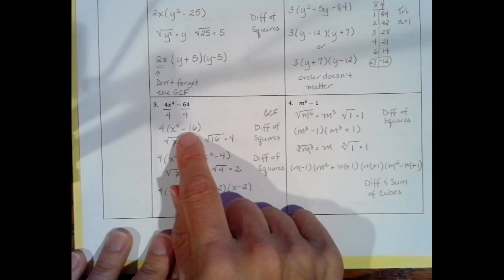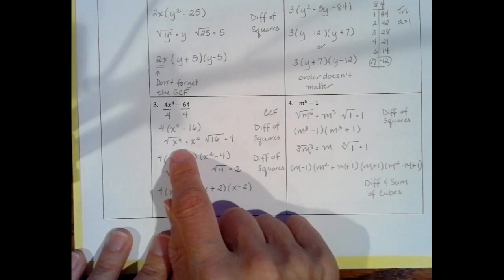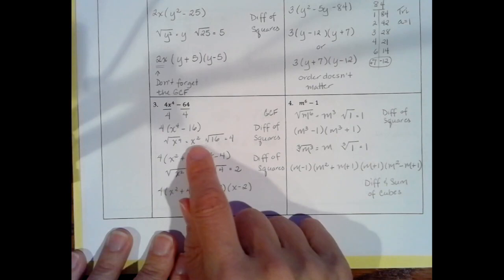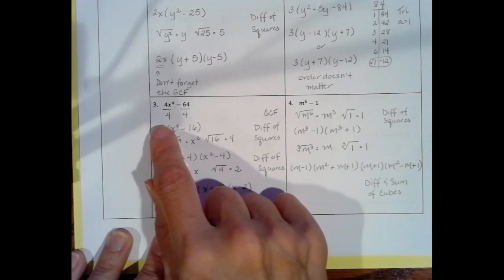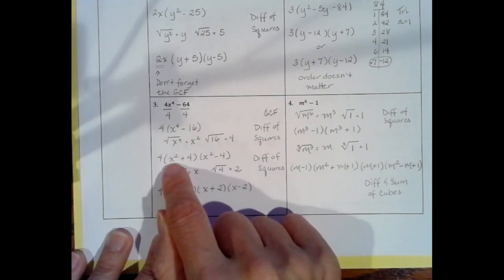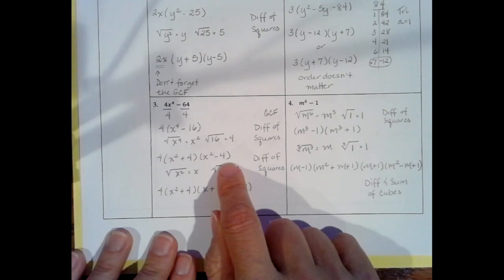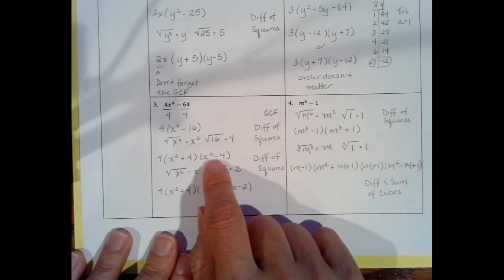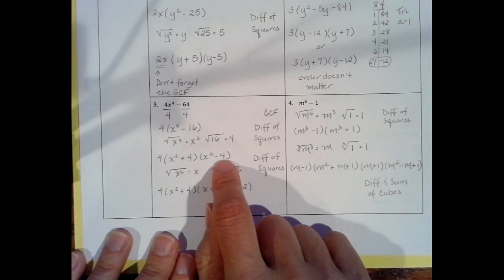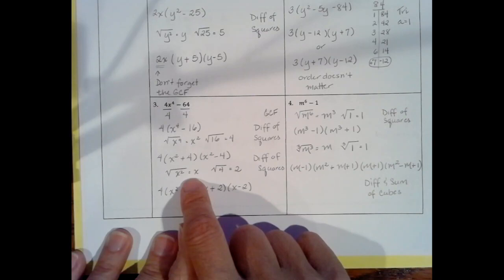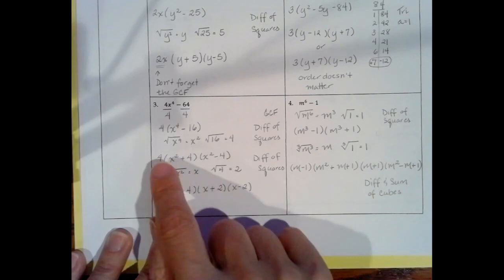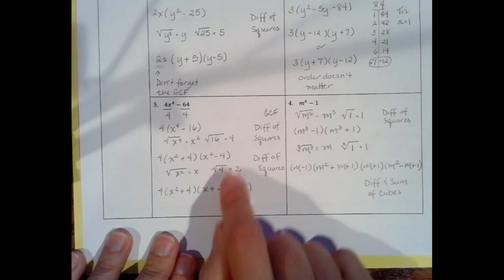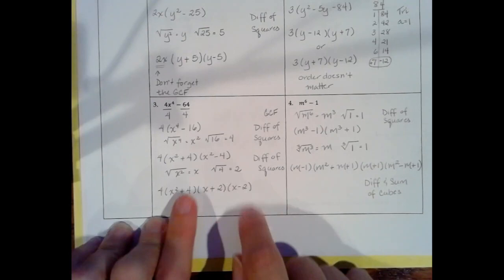I've got two terms, both perfect squares, so this is a difference of squares. Taking the square root of x to the 4th gives x squared, and the square root of 16 is 4. Bringing down the GCF of 4, I get x squared plus 4 times x squared minus 4. But we're not done — always check to see if you can factor again. I can't factor x² plus 4, but x² minus 4 has two terms, a minus sign, and each is a perfect square. So it's a difference of squares again: square root of x² is x, square root of 4 is 2. Final answer: 4 times x² plus 4 times x plus 2 times x minus 2.